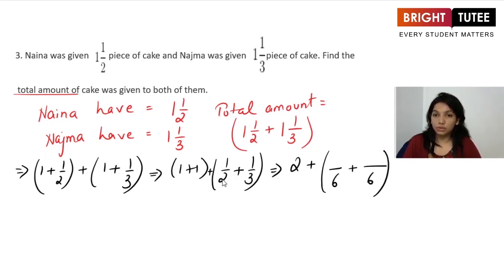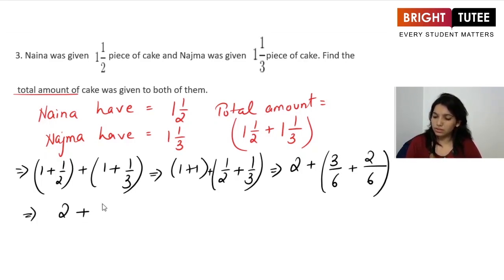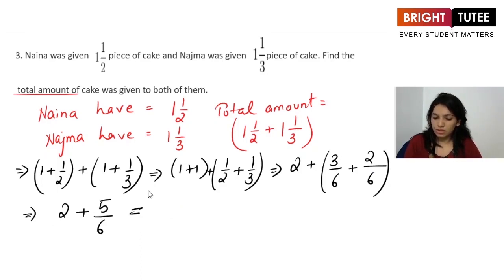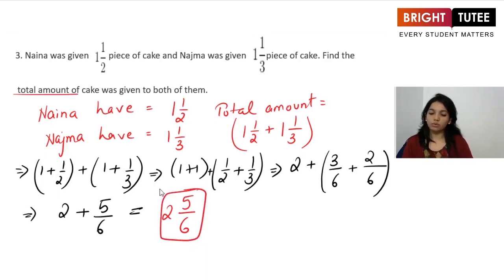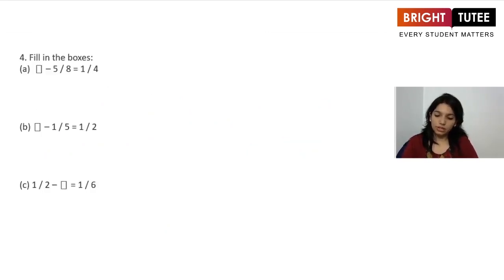2 times 3 is 6, so we multiply 1 with 3 to get 3/6. 3 times 2 is 6, so we multiply 1 by 2 to get 2/6. Adding these gives 2 plus 5/6. So the final answer is 2 and 5/6 — this is the total amount of cake given to both of them. Now let's do the next one: fill in the boxes.